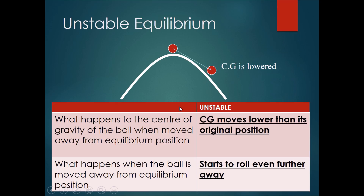This equilibrium concept is not only restricted to shapes — it also applies to other systems. For example, if a ball is on a hill, this would be considered an unstable equilibrium. If you push the ball a little bit to the side, the center of gravity is lowered — it moves lower than its original position. When you let go of the ball, it will start to roll even further away. Therefore, this is considered an unstable equilibrium.